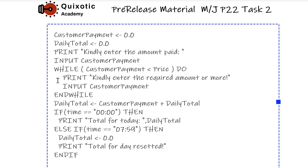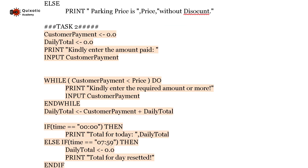Remember to use appropriate spacing — whatever part is inside the while loop should be a few spaces apart, and whatever part is inside the if or else statement should also be a few spaces apart. Looking at the bigger picture, we will incorporate all the stuff calculated and updated in Task 2 into the code for Task 1 to make it one program.